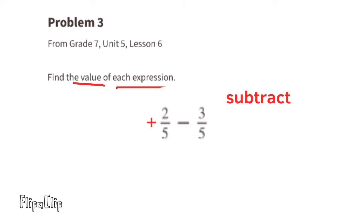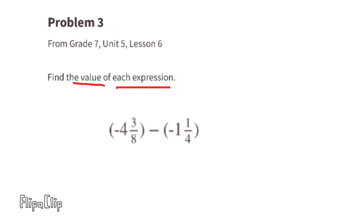Since both fractions have five as the denominator, the answer will also have five as the denominator. We subtract three from two: two minus three is negative one, so the answer is negative one-fifth. For negative four and three-eighths minus a negative one and one-fourth: minus a negative means the opposite of a negative, so we rewrite this as negative four and three-eighths plus one and one-fourth.